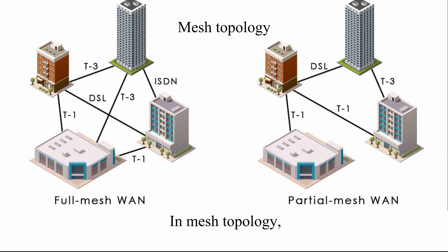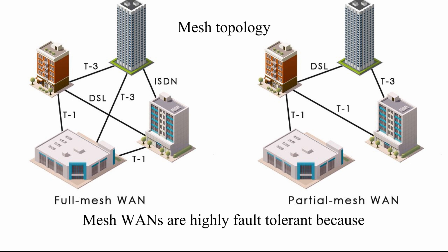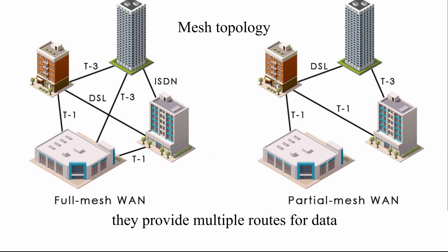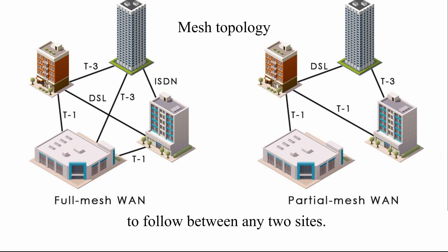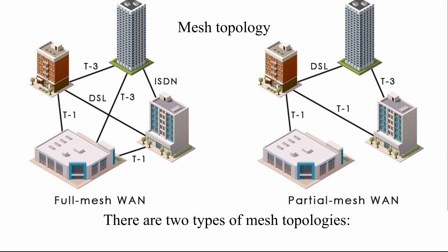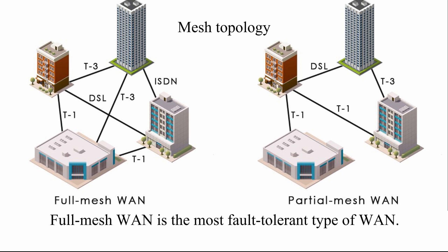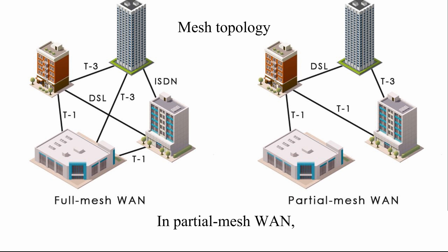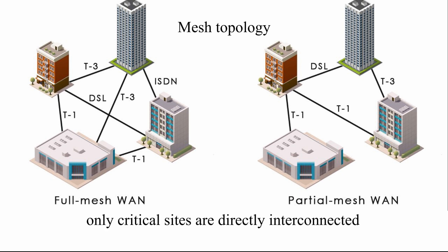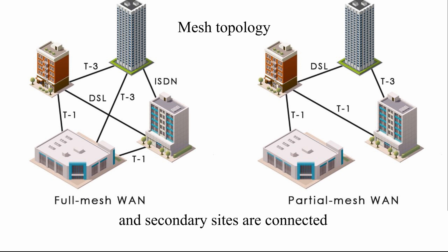In mesh topology, several sites are directly interconnected. Mesh WANs are highly fault-tolerant because they provide multiple routes for data to follow between any two sites. There are two types of mesh topologies. Full mesh WAN is the most fault-tolerant type. In partial mesh WAN, only critical sites are directly interconnected, and secondary sites are connected through star or ring topologies.